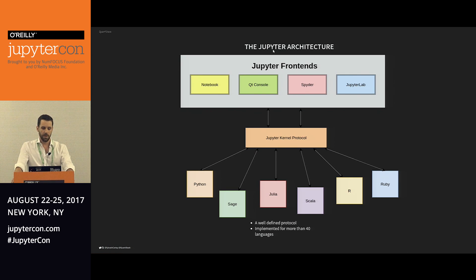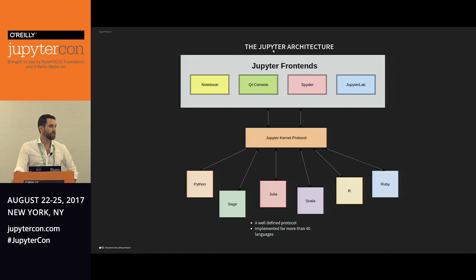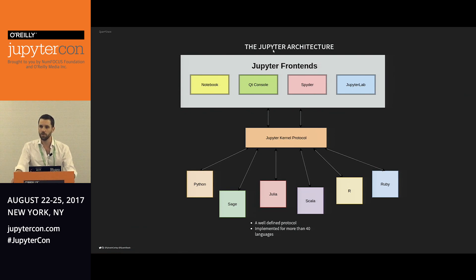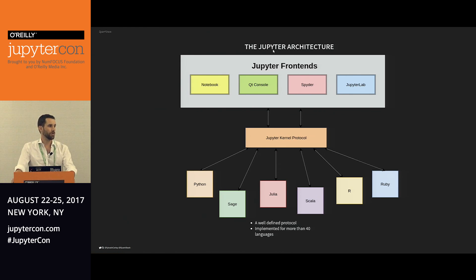Now we have more than 40 kernels that exist. By kernel, I mean the part of the infrastructure that is responsible for executing the code. We have kernels for Python, Sage, Julia, Scala, R, Ruby, and many more. All of these languages can now make use of the various Jupyter frontends, such as the notebook, the Qt console, JupyterLab, Spyder, and many others. The reason for that is that the protocol was really well defined and documented, and it's a reasonable endeavor to implement the protocol for a new language.